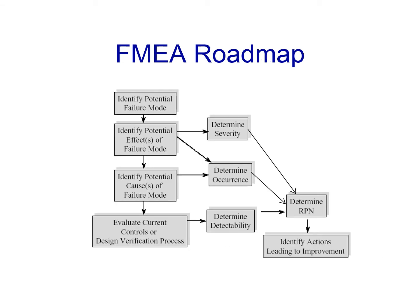Here are the various steps performed in a FMEA study — it's kind of like a roadmap. First, we identify the failure modes, then we identify the effects of this failure mode should it occur. This gives us a number for the severity of this effect and also gives us an idea about the occurrence probability and detection for this failure mode. We also identify the causes of this failure mode. This is followed by evaluating current controls to determine whether it's possible to detect such a failure mode before it occurs, which gives us a value for detectability.